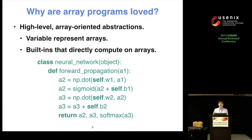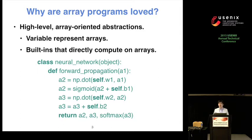Why are array programs so special and loved by these communities? Array libraries give programmers a high-level array-oriented abstraction. Let's look at an example: this NumPy function implements forward propagation, a core component of neural networks. This function first takes a data array A1 as input, and then computes the output for the next layer by multiplying A1 with weight W1. The activation function here is sigmoid.